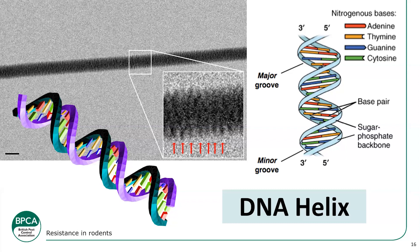When a resistant mutation is present in one parent, that's heterozygous; when it's present in both parents, that's homozygous. What's been discovered in some areas — first found in Scotland — is that both parents were carrying a resistant mutation but each carried a different strain. They found the L128Q Scotland strain, as expected, but also the highly resistant Hampshire strain L120Q in the same rats. So there are now colonies of rodents with two different strains of mutations within their DNA.